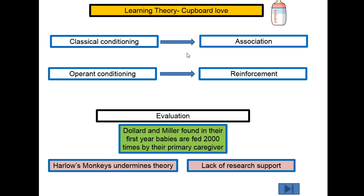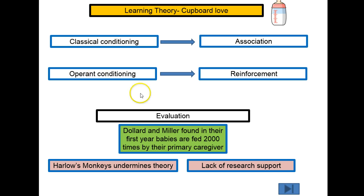The key words here are: all our behaviour is learnt, and we learn this through either classical or operant conditioning. You need to know about the UCS, UCR, etc., and operant conditioning and positive reinforcement. Make sure you use plenty of examples and explanations.